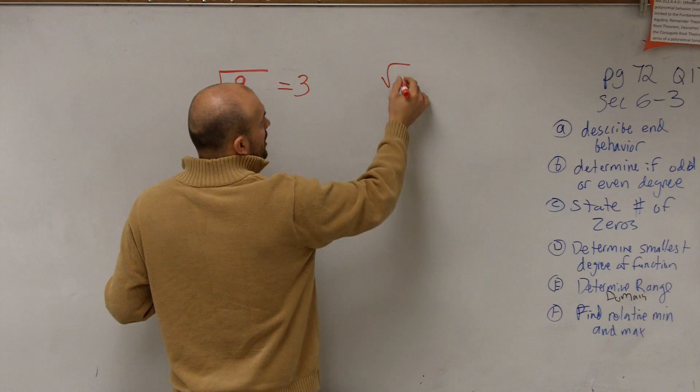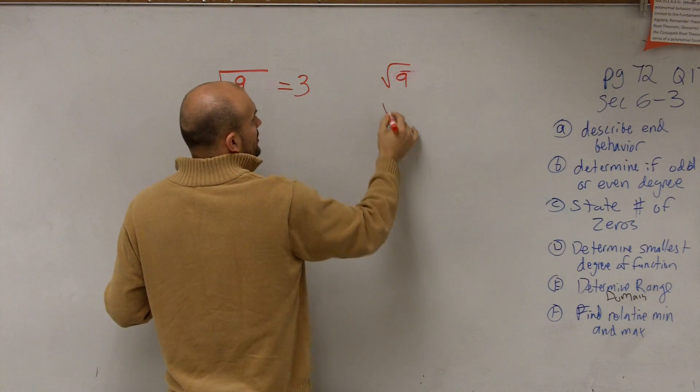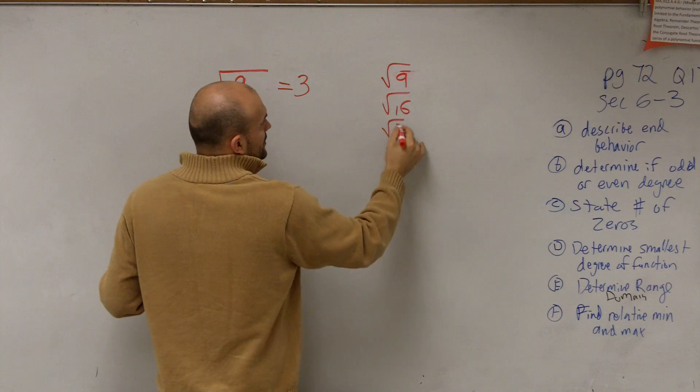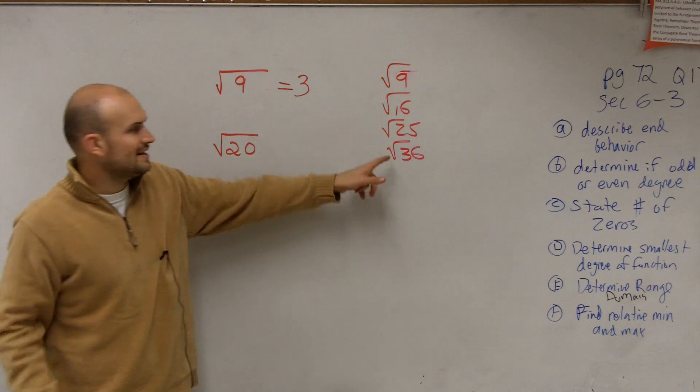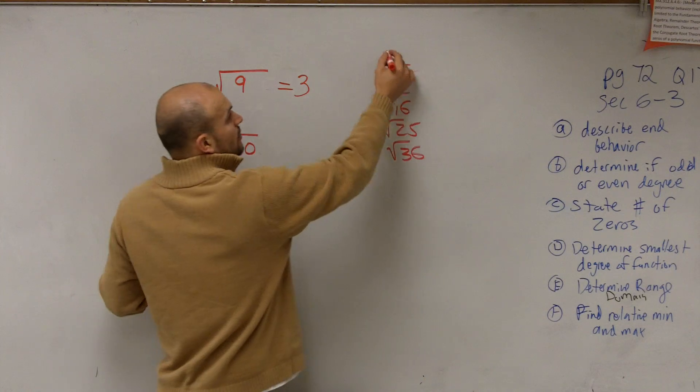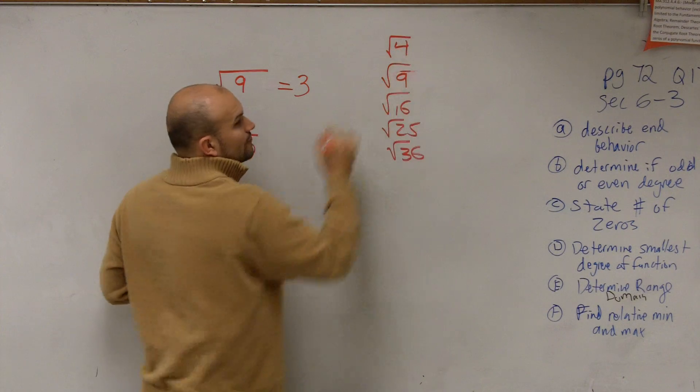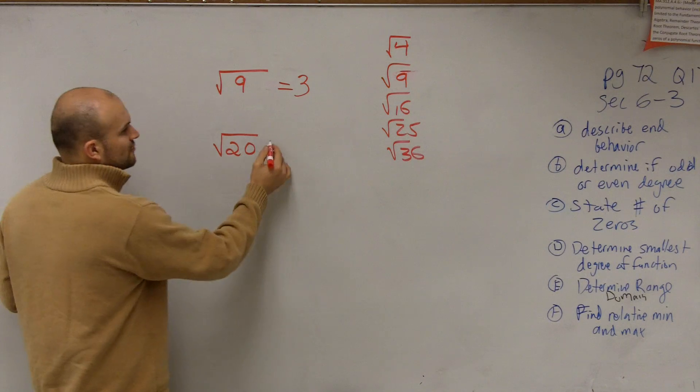We know the square root of 9, 16, 25, and 36. Do any of these numbers divide into 20? No. We also know the square root of 4. Does 4 divide into 20? Yeah. So is it possible for me to say, then,